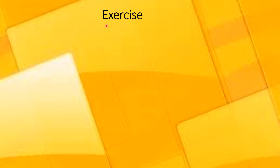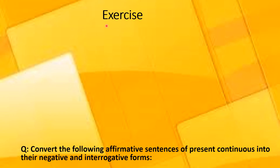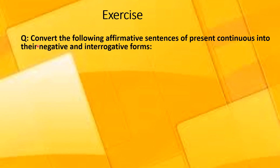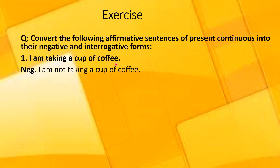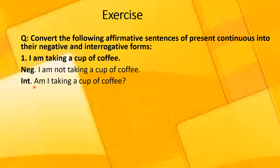Now let me help you and elaborate it more with the help of examples. You are supposed to convert the following affirmative sentences of present continuous tense into the negative and interrogative forms. The first sentence is: I am taking a cup of tea. Your negative sentence would be: I am not taking a cup of tea. Here is your interrogative sentence: Am I taking a cup of tea?